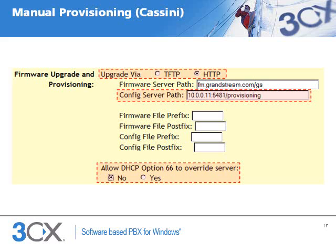Assuming the 3CX phone system machine has IP address 10.0.0.11, the provisioning path for a Cassini install will be 10.0.0.11:5481/provisioning. While the provisioning path for an IIS install will be 10.0.0.11:80/management/provisioning. After the next reboot, the phone will retrieve its settings from the PBX's provisioning directory.